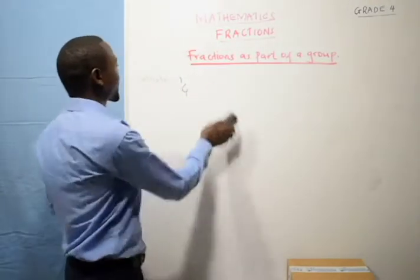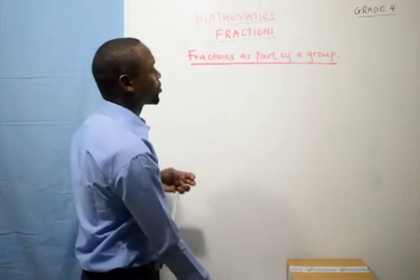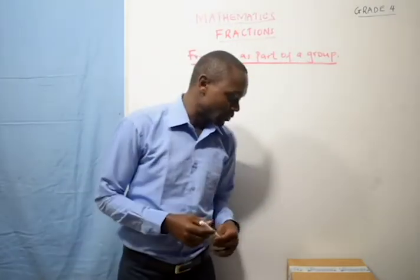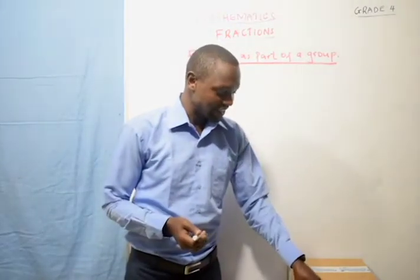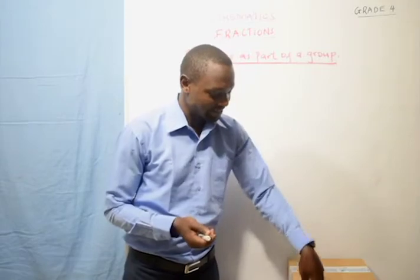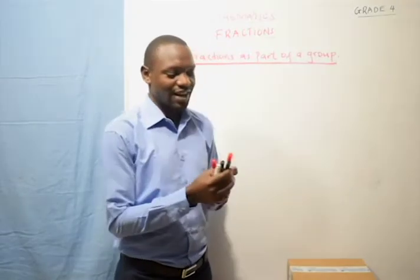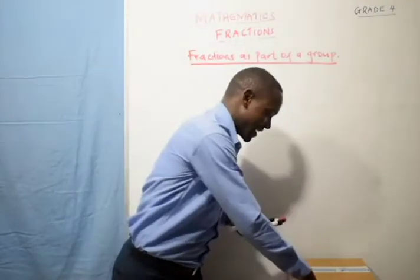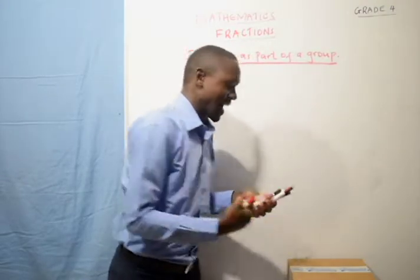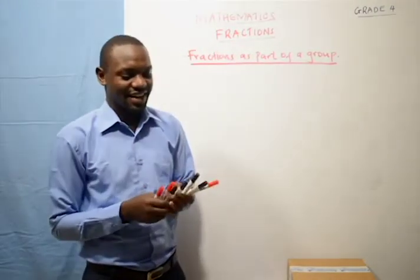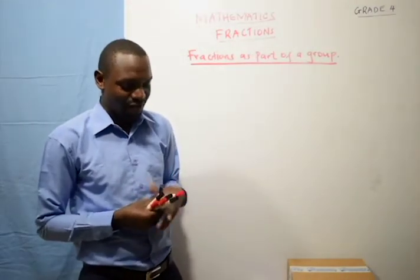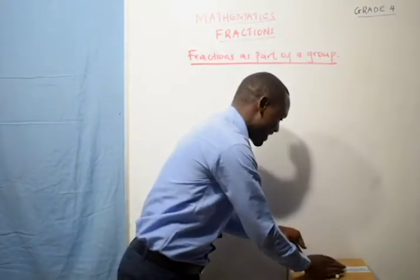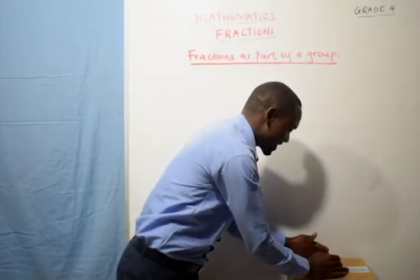So today we are looking at fractions as part of a group. We can have a group of, for example, ten pens or seven pens. We can have a group of seven pens, and those seven pens are here.